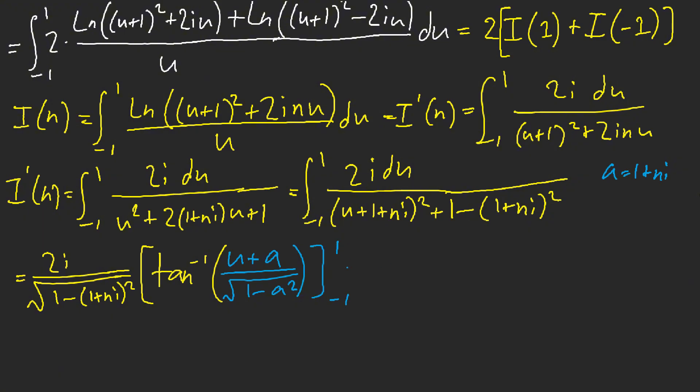Now it's a lot easier to complete the square. So 2i du, we get u squared plus 2, 1 plus ni, u plus 1. And if we complete the square, this is like, thank God with this 2, now it's a lot easier because I could just go like this, 1 plus ni squared, and then plus 1 minus 1 plus ni. I'm just going to keep it like this for the sakes of speed solving. So now this is just inverse tangent stuff, right? So this is all equal to 2i square root of 1 minus 1 plus ni squared. And we have inverse tan of like u plus, let's let a equal 1 plus ni. Then we have u plus a over square root of 1 minus a squared.